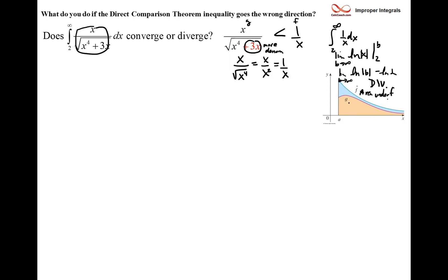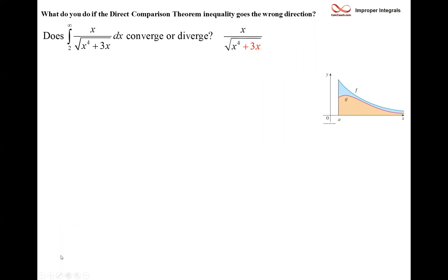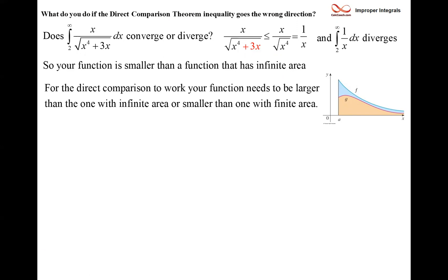The area under the larger function F diverges, but that doesn't say anything about the area under G — it could be infinite or a finite number. The inequality is going the wrong way; we needed the larger function to have a convergent area in order to conclude the lower function is also convergent. So we can't use the direct comparison test here, but we can recover by doing something else: the limit comparison theorem.